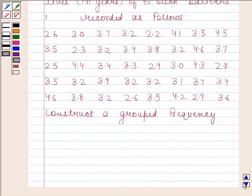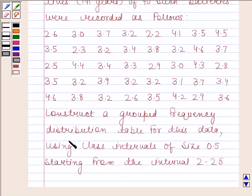This is the data given to us. Construct a grouped frequency distribution table for this data using class intervals of size 0.5, starting from the interval 2 to 2.5.